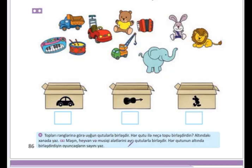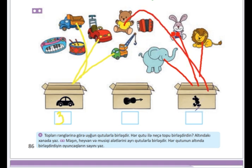Tapşırıq ikiyə baxaq. Maşın, heyvan və musiqi alətlərini ayrı qutularla birləşdirir. Hər qutunun altında birləşdirdiyin oyuncaqların sayını yaz. Deməli, maşınları əvvəl gəlin edək. Bir, iki, üç - üç maşın oldu. Oyuncaqlara baxaq. Bir fil, iki şir, üç dövşan, dörd ayı - dörd oyuncaq heyvan qutuya. Musiqi alətləri: tar, nağara, qarmon, sintezator - dörd musiqi aləti.